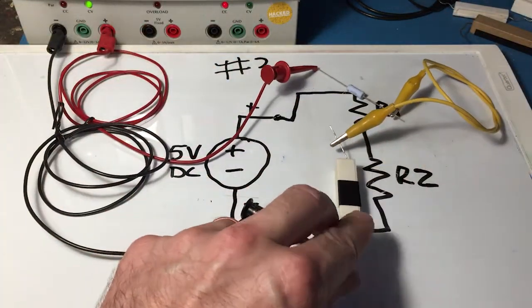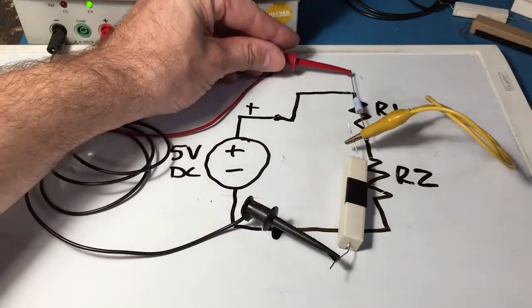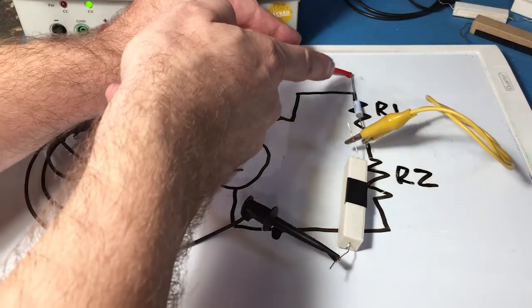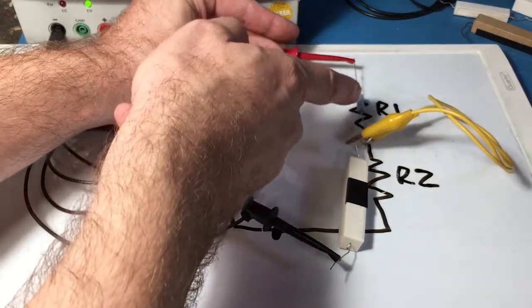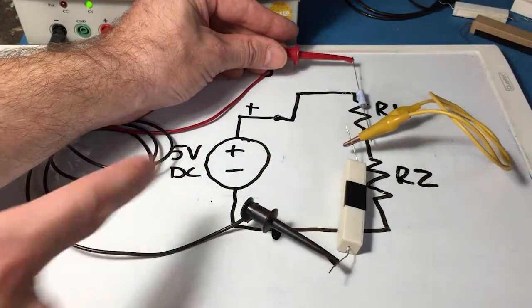So you can see the circuit, if we arrange that a little bit better right there. Right there we have our power supply red wire. Red's connected to R1, yellow wire connects R1 to R2, R2 goes back to ground.